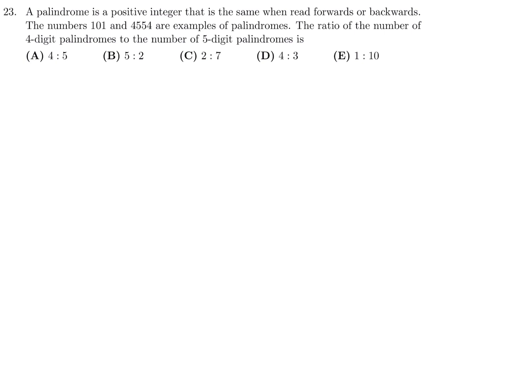A palindrome is a positive integer that is the same when read forwards or backwards. The numbers 101 and 4554 are examples of palindromes. The ratio of the number of 4-digit palindromes to the number of 5-digit palindromes is. Well, let's talk about this. In a 4-digit number, if we want it to become a palindrome, the first digit cannot be 0. The first digit has to be anywhere from 1 to 9. So that's 9 choices. The last digit has to be the same as the first digit in order for it to be a palindrome. So that has one choice.